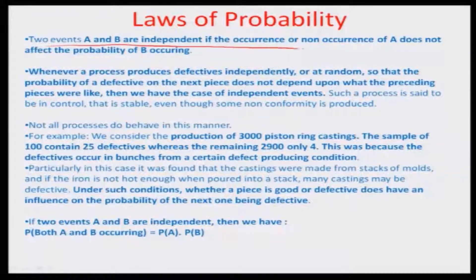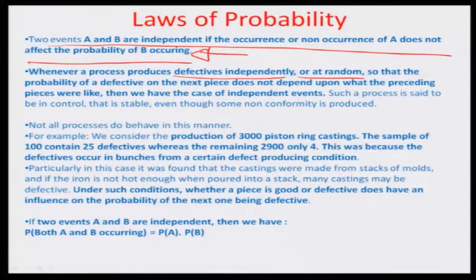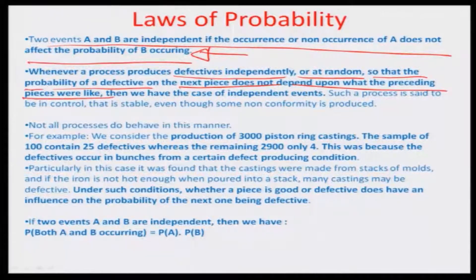Two events A and B are independent if the occurrence or non-occurrence of A does not affect the probability of B occurring. For example, whenever a process produces defectives independently or at random, the probability of a defective on the next piece does not depend on what the preceding pieces were like — we have a case of independent events. Such a process is said to be in control, even though some non-conformity is produced.